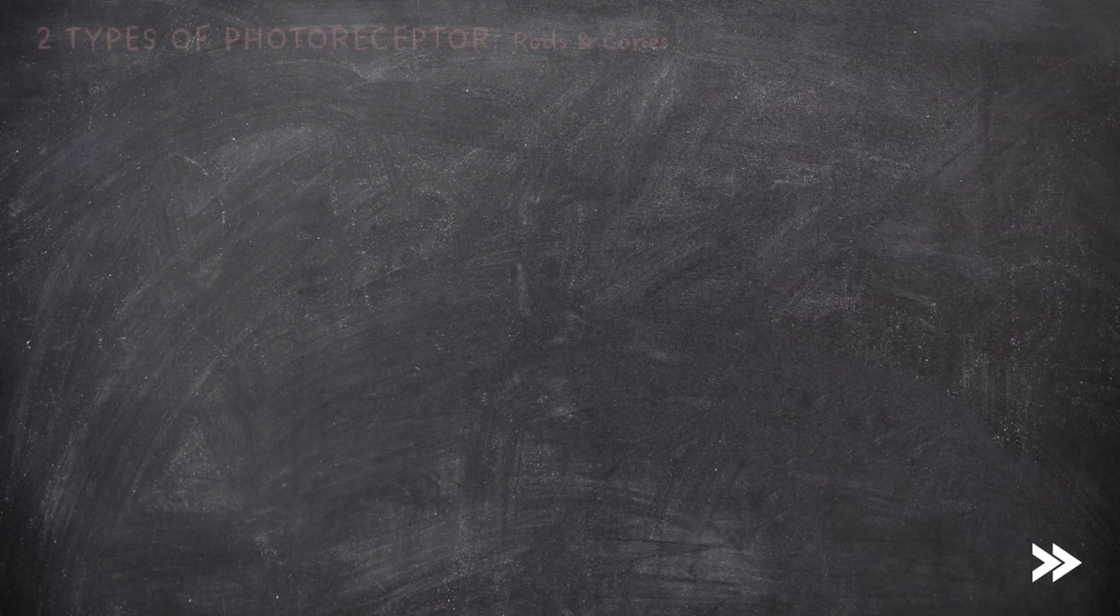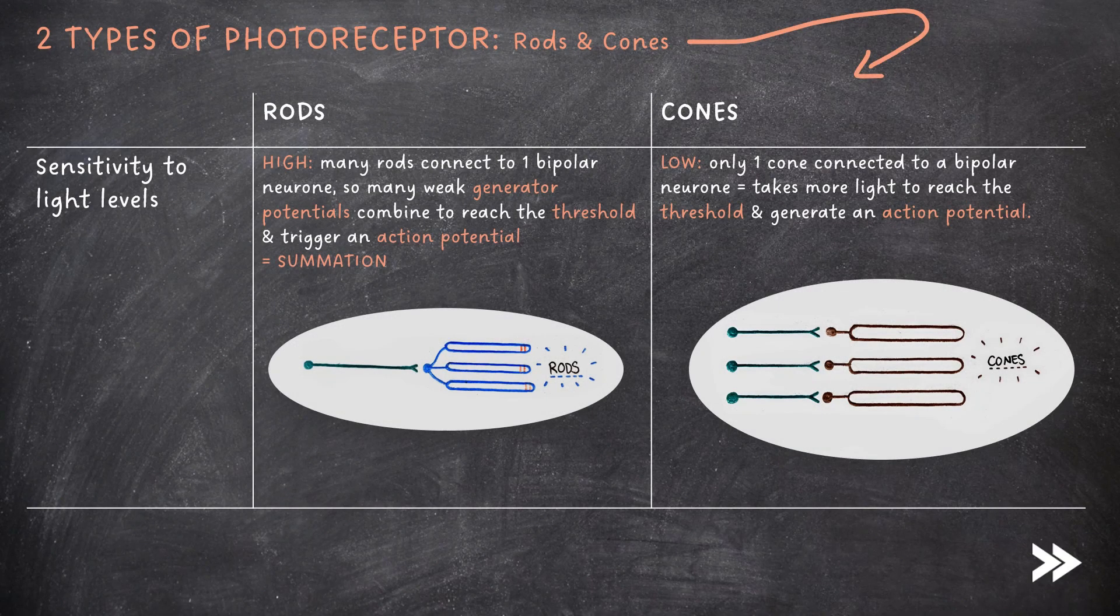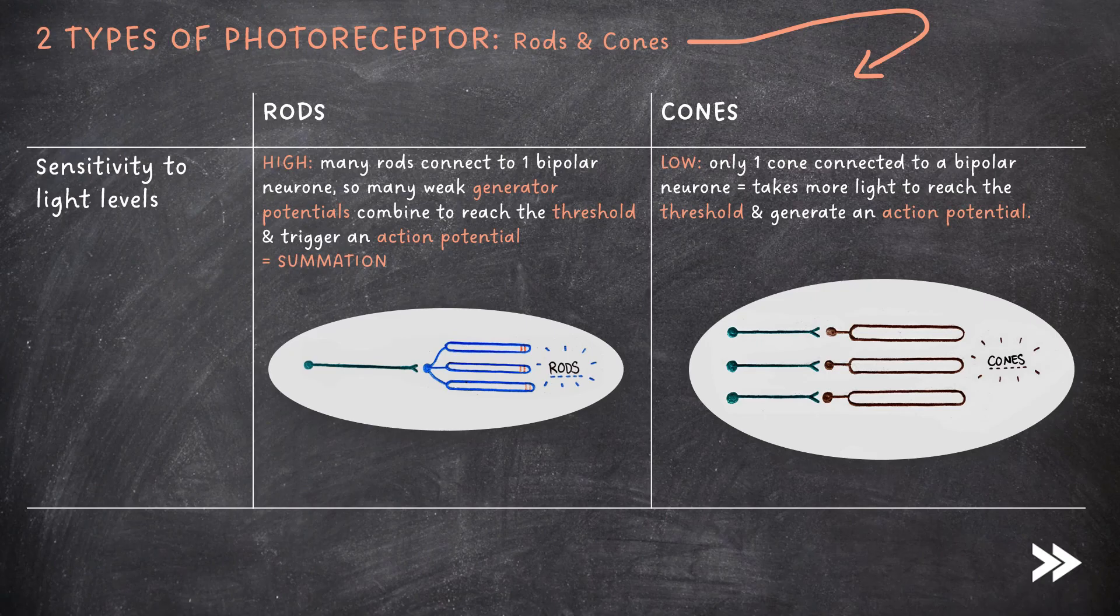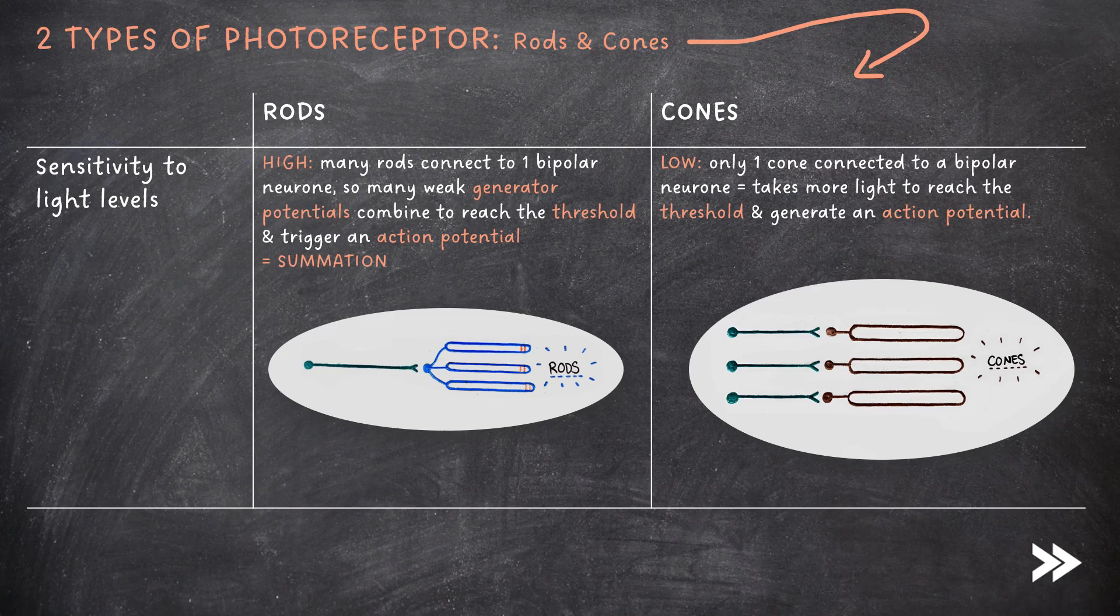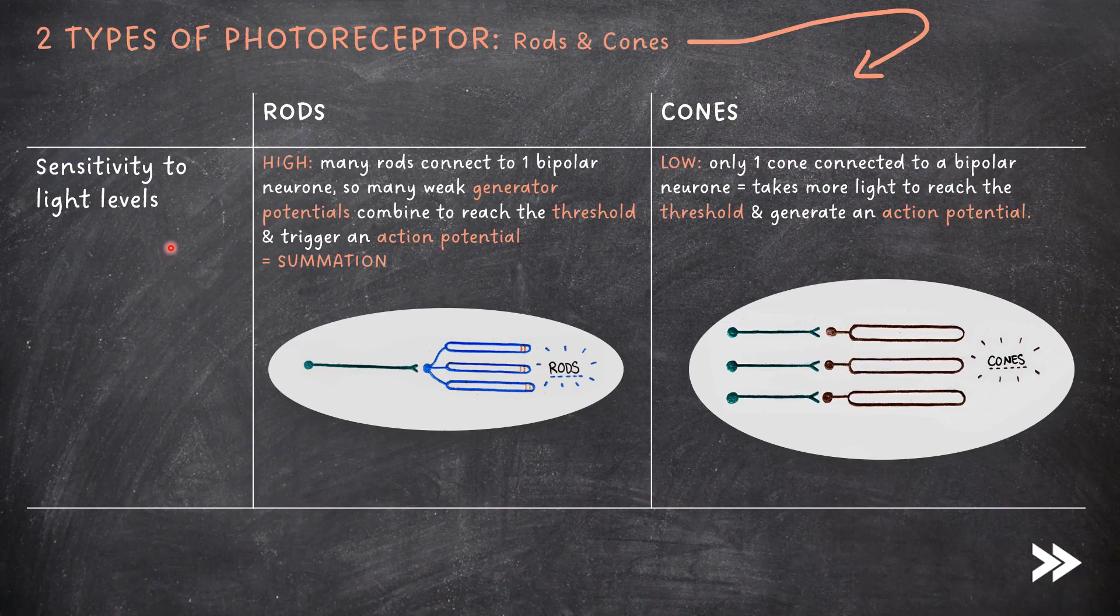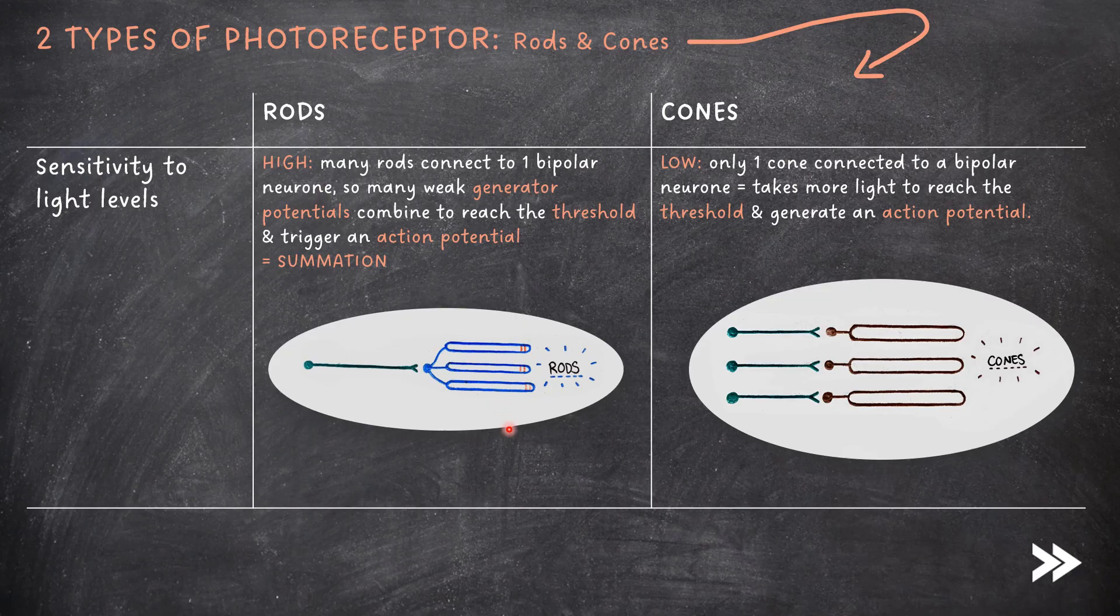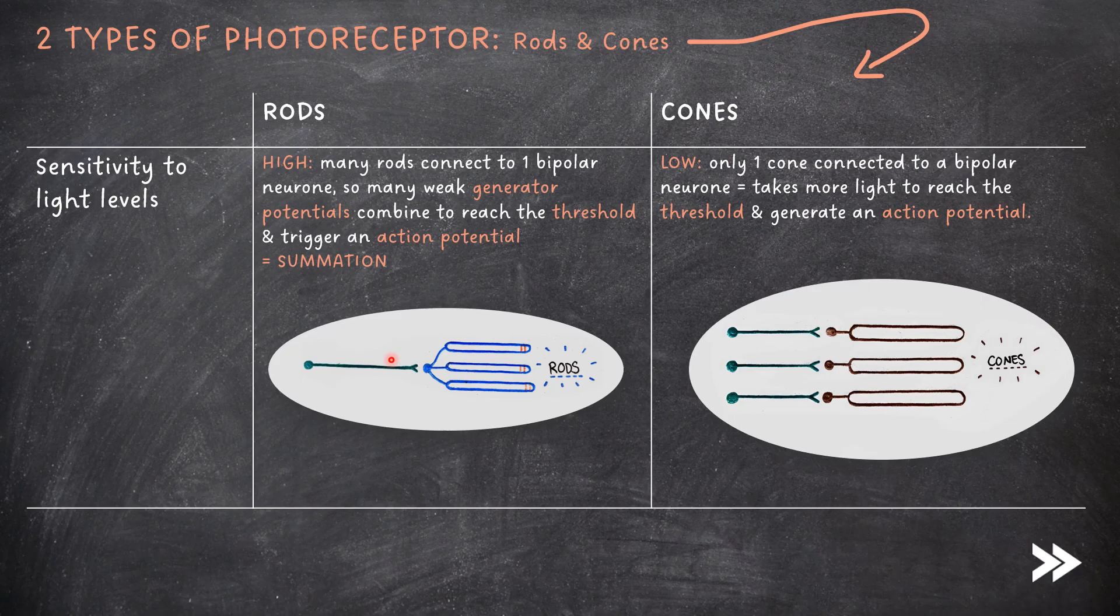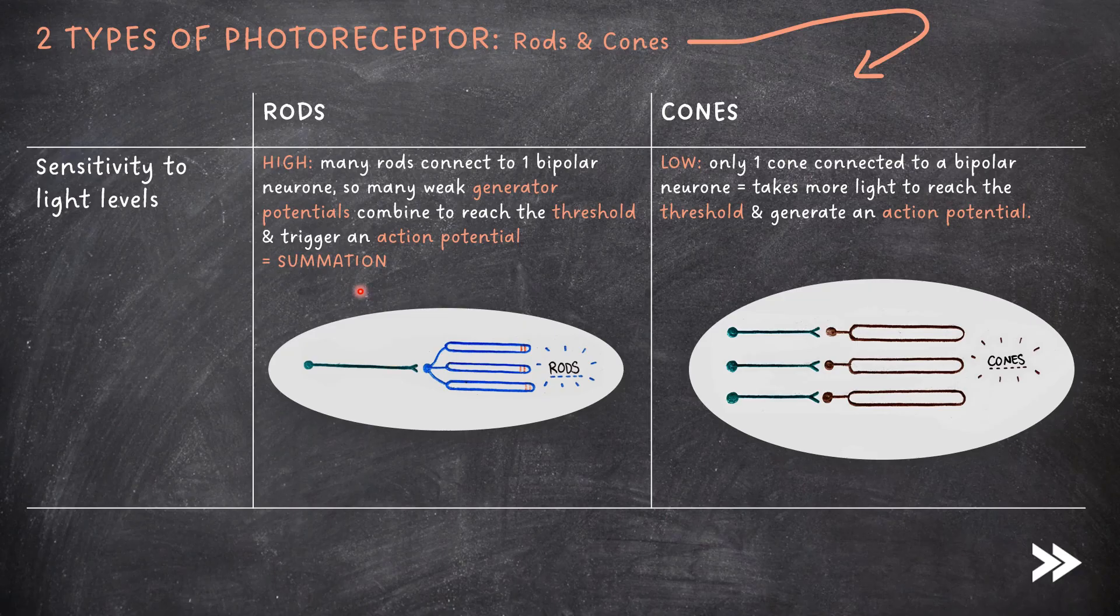So there are two types of photoreceptor, rods and cones. The spec wants us to compare these in terms of sensitivity to light, sensitivity to colour, and visual acuity, which is basically the resolution, the smallest distance that two objects can be apart for them to be distinguished as separate objects. So let's start with sensitivity to light levels. Rods have a high sensitivity to light levels, because many rods connect to one bipolar neuron, so many weak generator potentials combine to reach the threshold and trigger an action potential. This is known as summation.